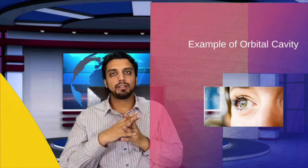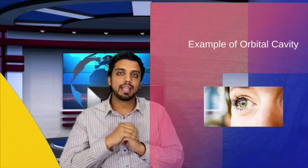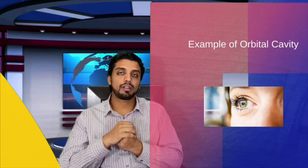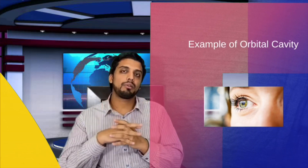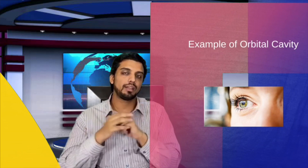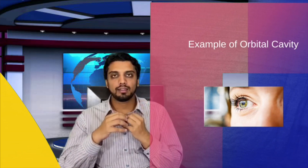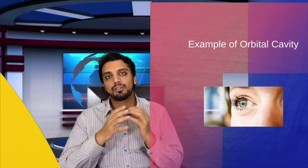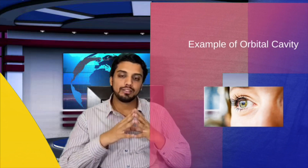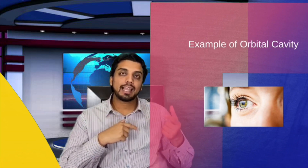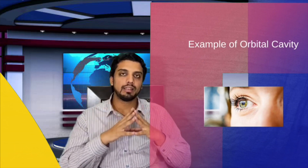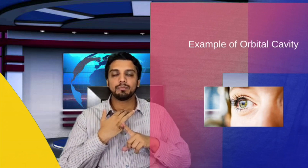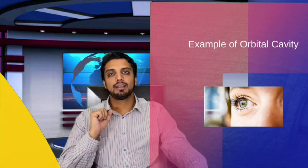The second example Profit's book gives is about the orbital cavity. The size of the skeletal orbital cavity is determined by the size of the eye (soft tissue). If the size of the soft tissue eye is small, the size of the orbital cavity will be small. If the size of the eye is large, the skeletal orbital cavity will correspondingly be large. The soft tissue eye is basically determining the size of the skeletal orbital cavity.